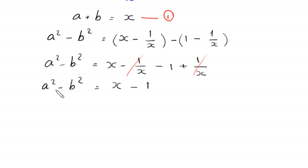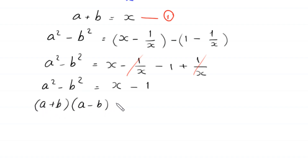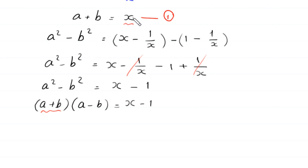Now a squared minus b squared can be factored as (a plus b)(a minus b) equals x minus 1. In place of a plus b we substitute the value from equation 1, which is x.